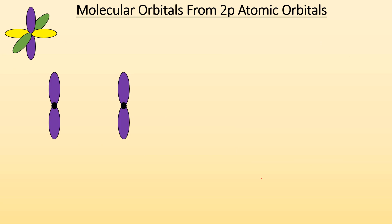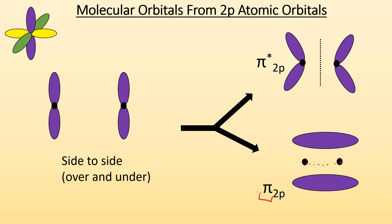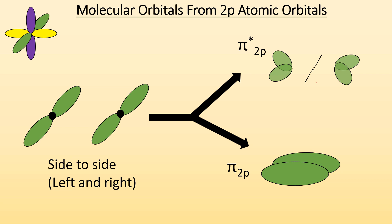The p orbitals can also add side to side, forming a bonding molecular orbital by overlapping above and below the nuclei. Since it's not along the internuclear axis, it's a pi orbital — sigma is along the internuclear axis, and if it's not, it's a pi. So that gives us a pi 2p bonding molecular orbital. They can also repel each other, giving the pi star 2p molecular orbital, with a node in between the two nuclei. Another set of p atomic orbitals can combine side to side as well — left and right — giving the same pi 2p and pi star 2p.